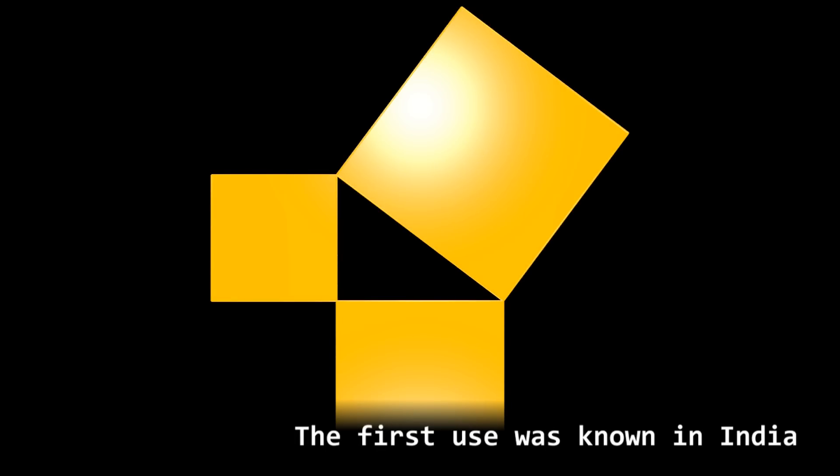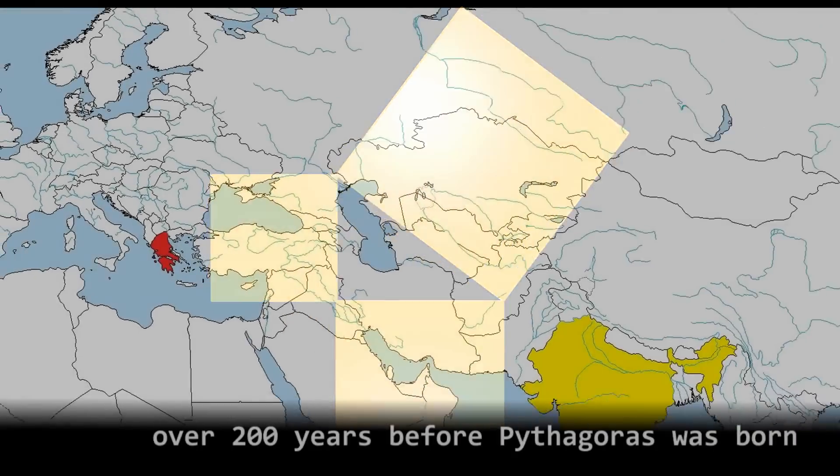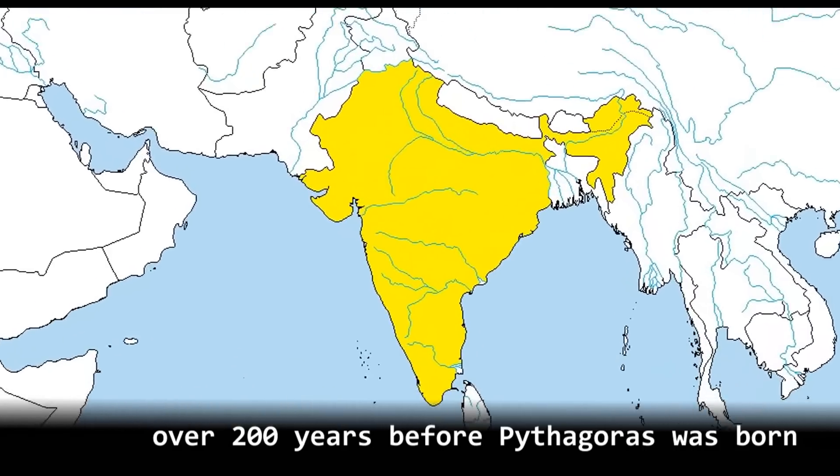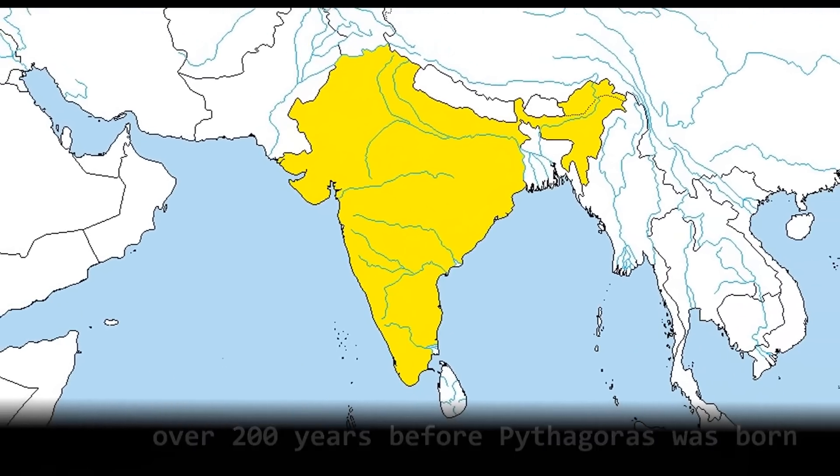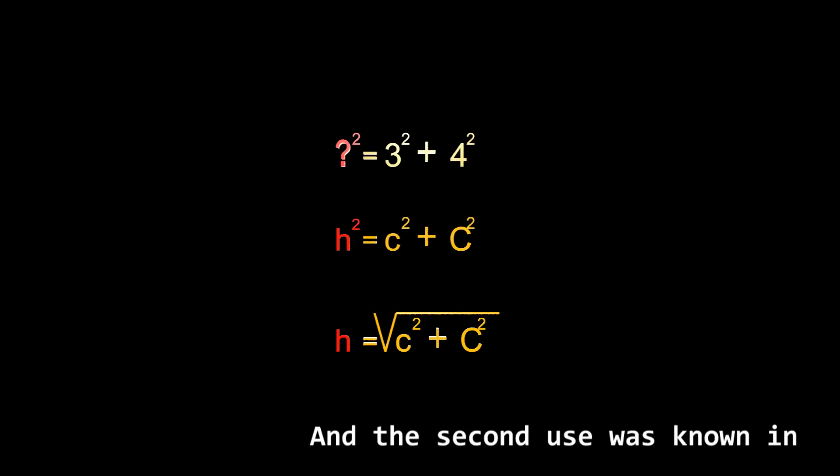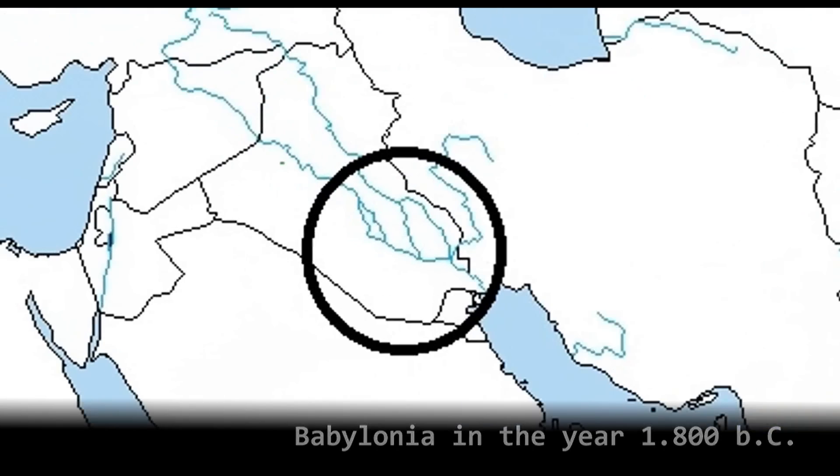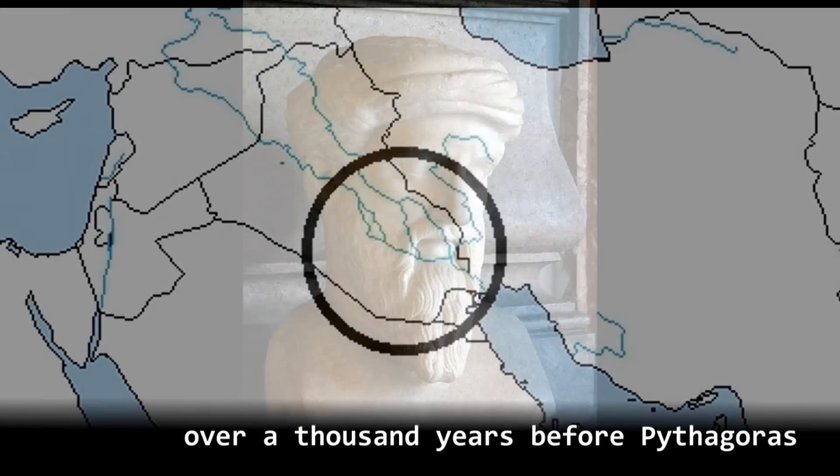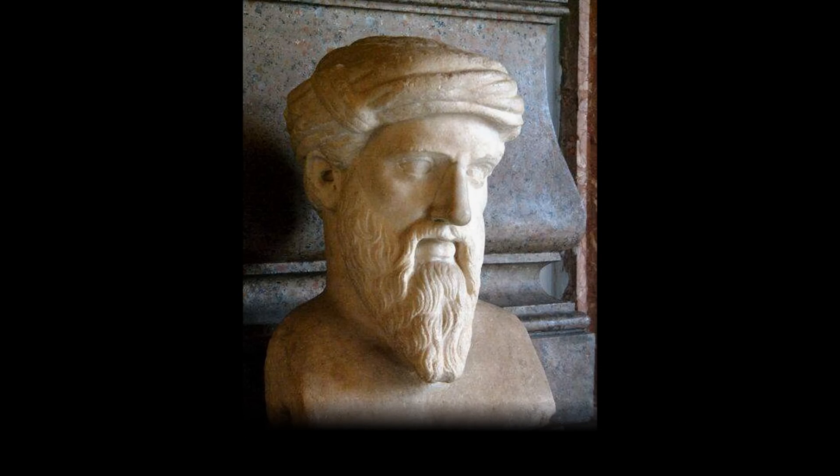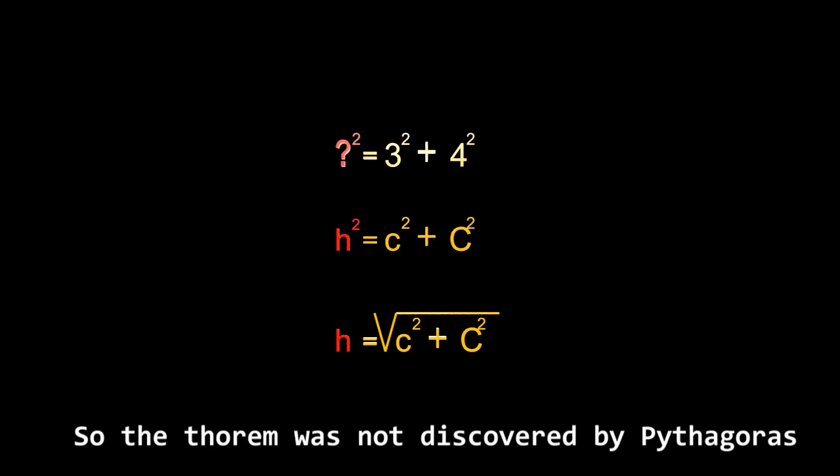The first use was known in India over 200 years before Pythagoras was born. And the second use was known in Babylonia in the year 1800 before Christ, over a thousand years before Pythagoras. So the theorem was not discovered by Pythagoras.